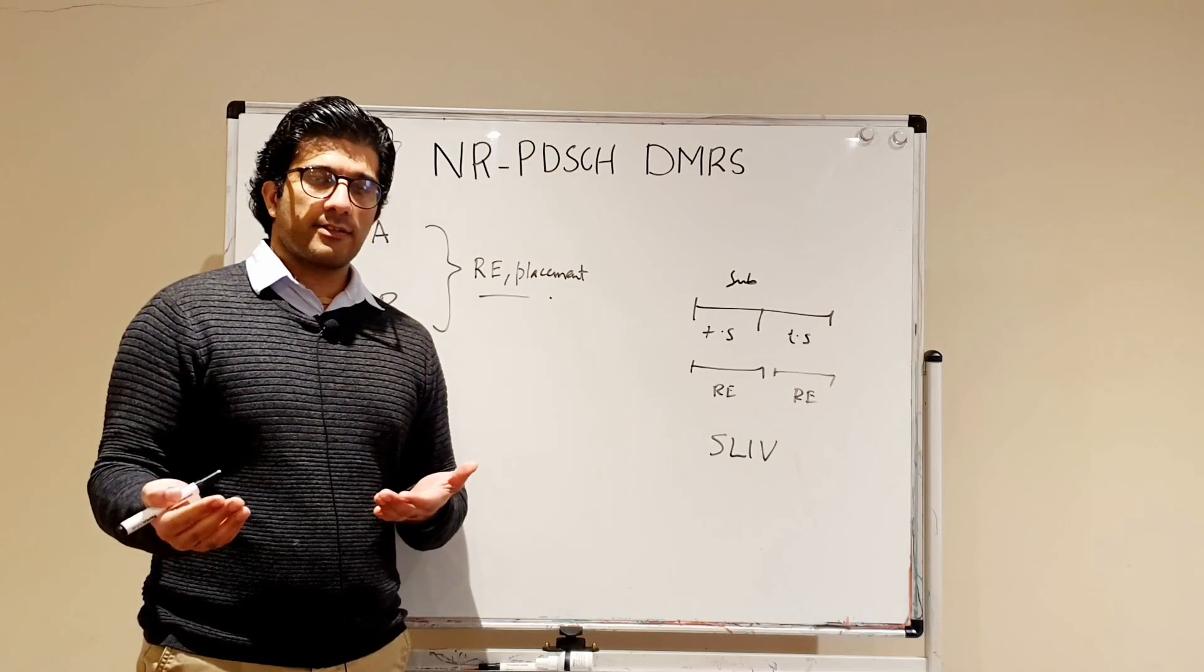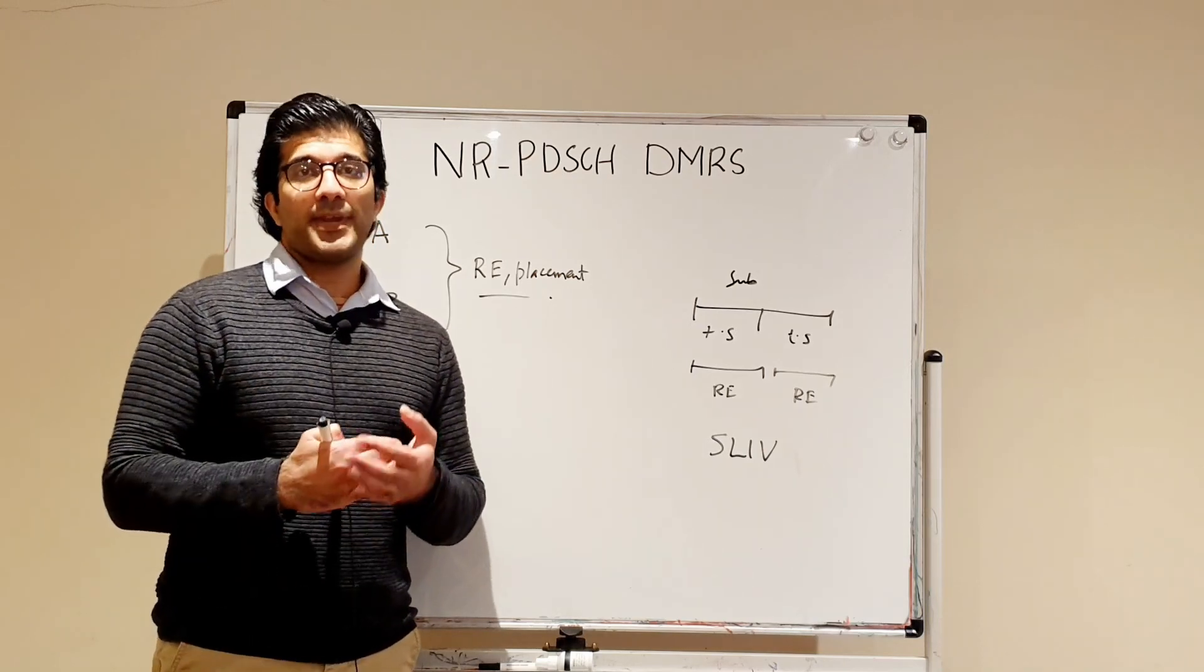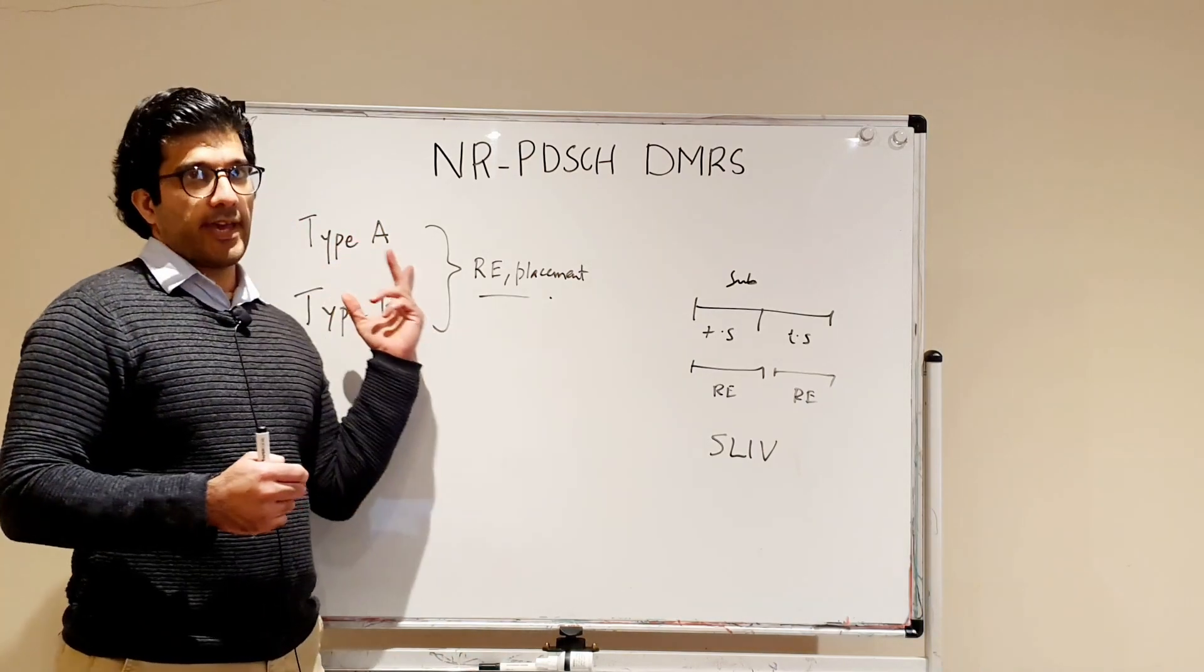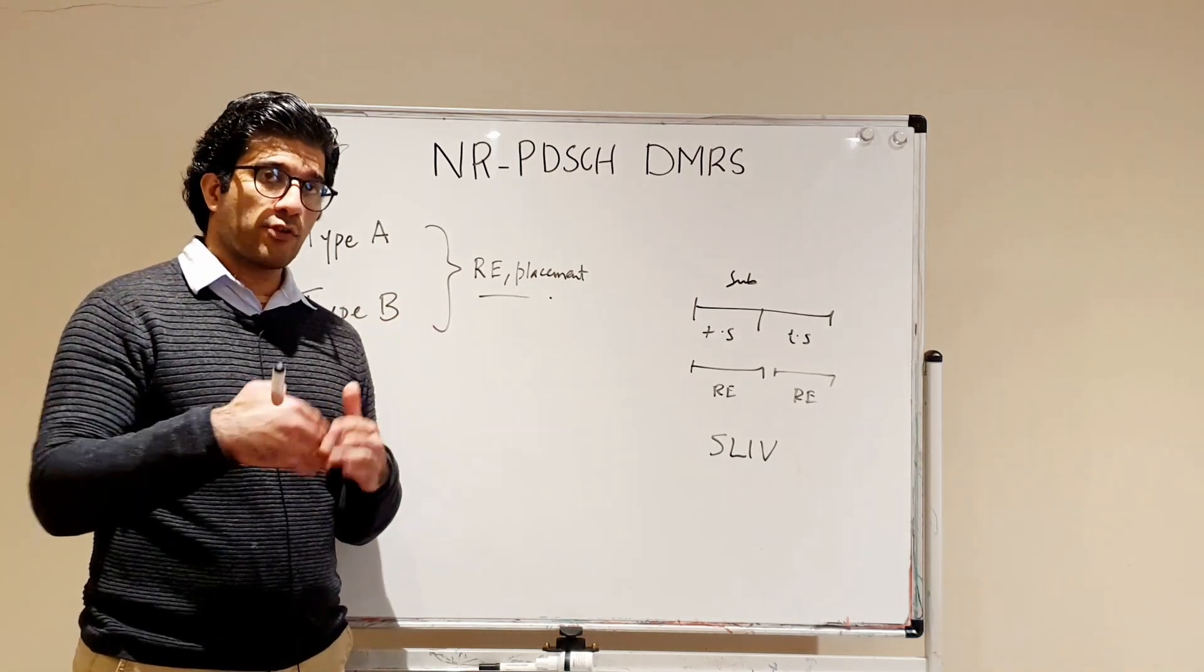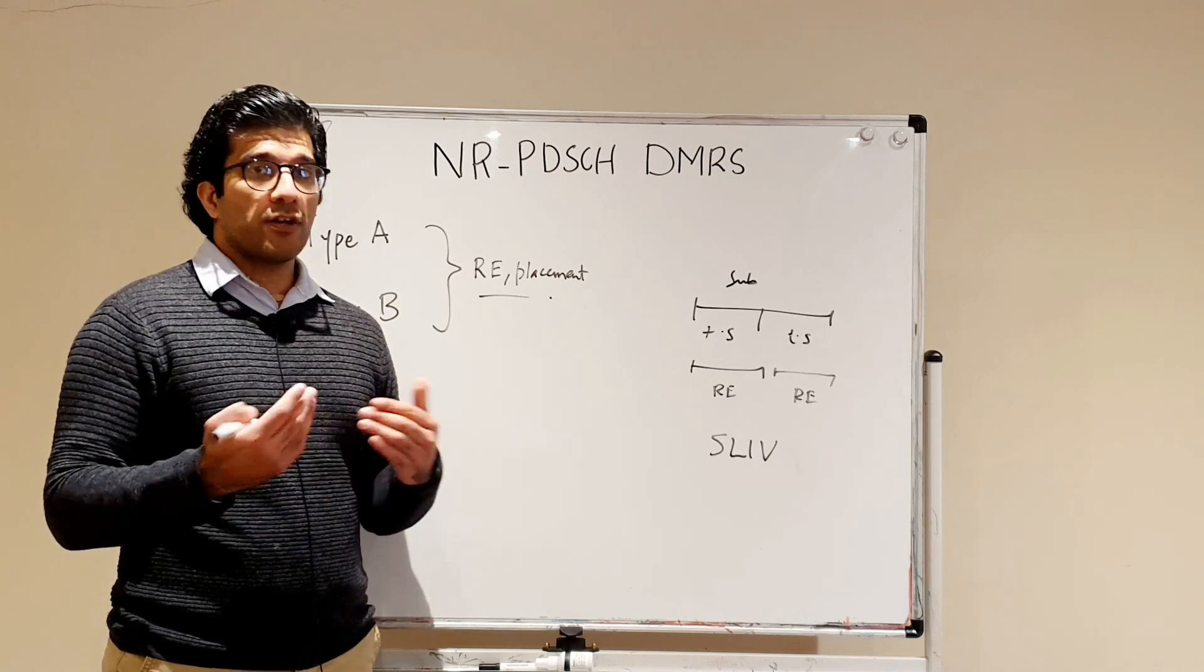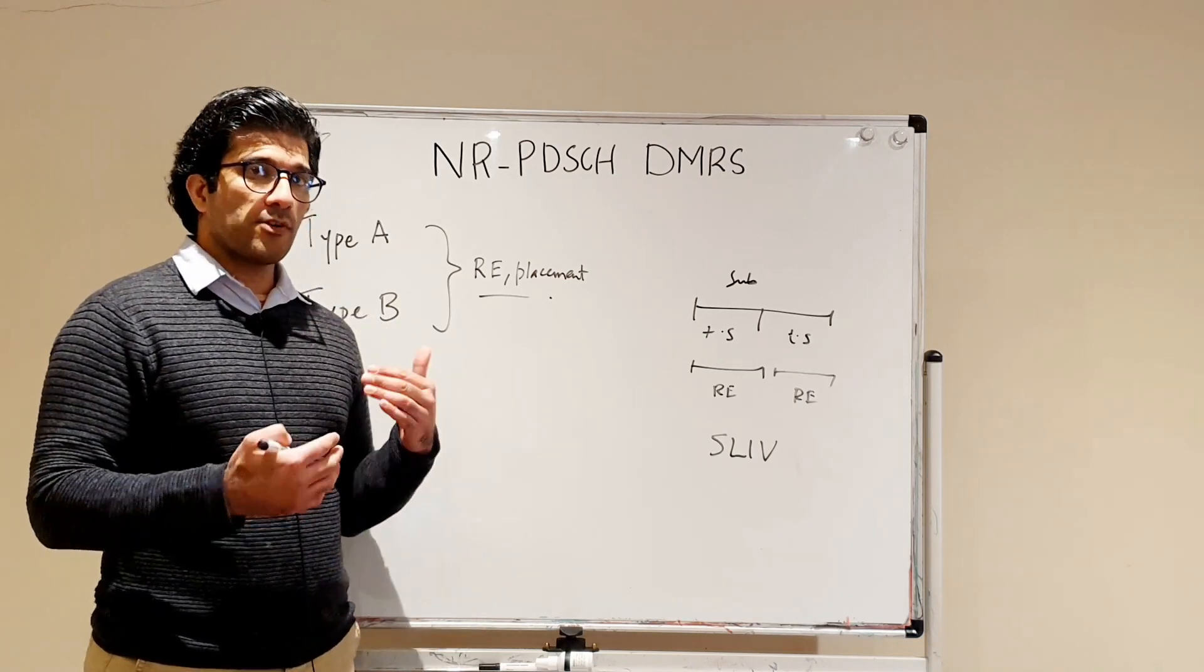For example, if your PDSCH is starting from slot 4, then you cannot be allocated this one because only slot 2 and 3 can have this Type A PDSCH DMRS.